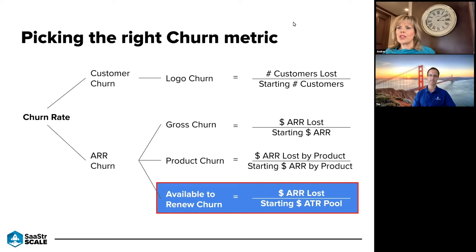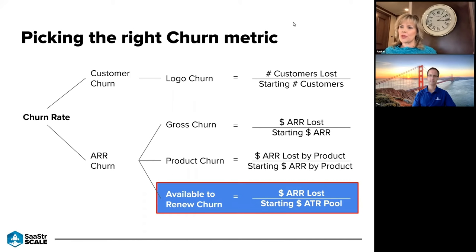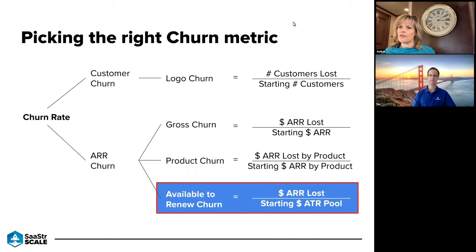In our perpetual business we use available-to-renew churn and normalize things like FX impact and price increases, because it's really important to look at what's available to renew and what we're renewing against. That's what I use as the baseline metric to measure the team. In our SaaS and subscription models we do it a little differently, but no matter what the business or how many products you have, you pick a main-line number and all the others have to be defined in order to holistically move the business forward.